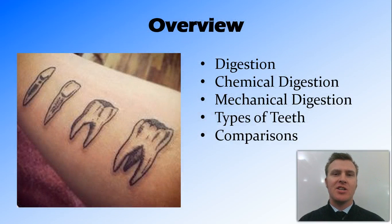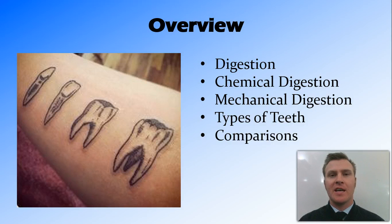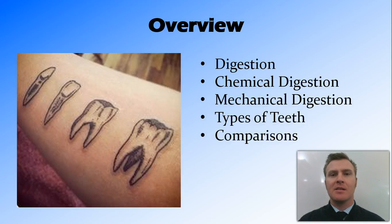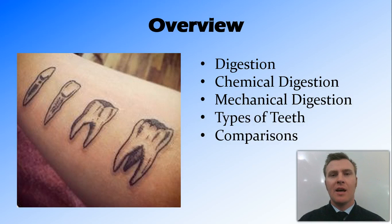In this video we have looked at digestion — the breaking down of food into small enough pieces that our body can absorb them. We have looked at chemical digestion, which is aided by enzymes broken into three classes: amylases, proteases, and lipases. We have looked at mechanical digestion, which mainly occurs with the teeth, and the four different types: incisors, canines, premolars, and molars. We have compared different mammals and noticed that carnivores have larger canines and incisors, while herbivores have flat molars and premolars for grinding.